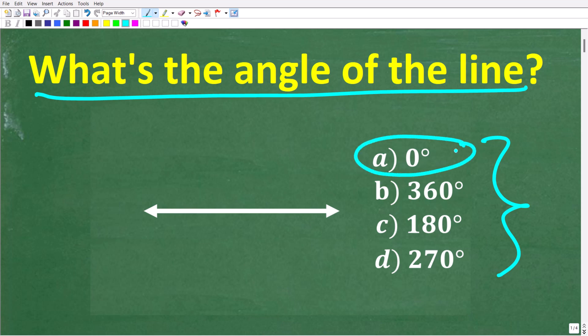So we have a line, and does this line have an angle? Well, one of these options right here is correct. A is 0 degrees, B is 360 degrees, C is 180 degrees, and D is 270 degrees. Now, if you think you know the answer, go ahead and put that into the comment section. I'm going to show you the correct solution here in just one second, then walk through step by step how we can answer this question.